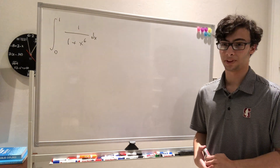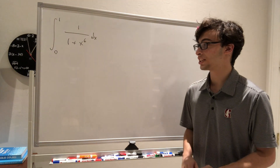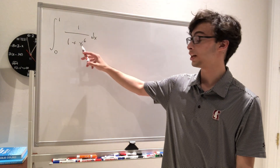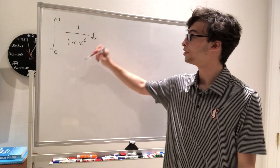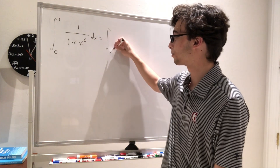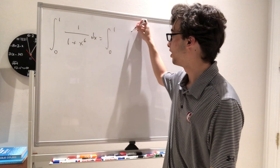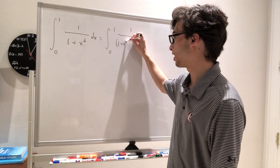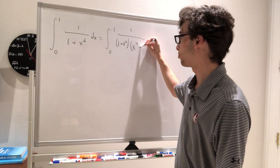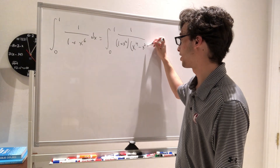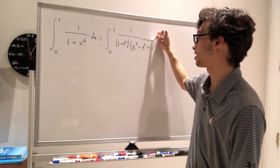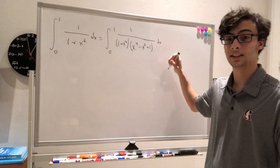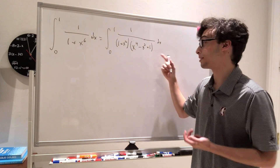Where do we start with this? Well, the first thing I see is that 1 plus x to the 6 actually factors because it's a sum of cubes. So we can rewrite this as the integral from 0 to 1 of 1 over (1 plus x squared) times (x to the 4th minus x squared plus 1). That's just using the sum of cubes formula — if you expand that out, you do in fact get the same thing.